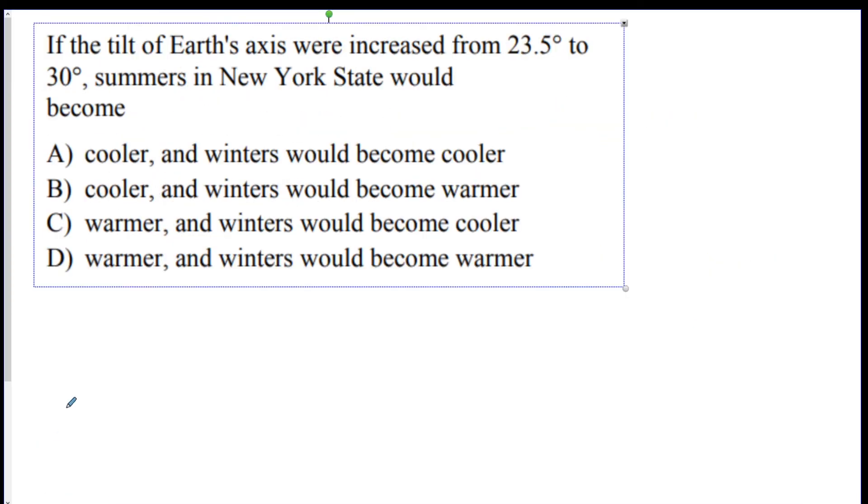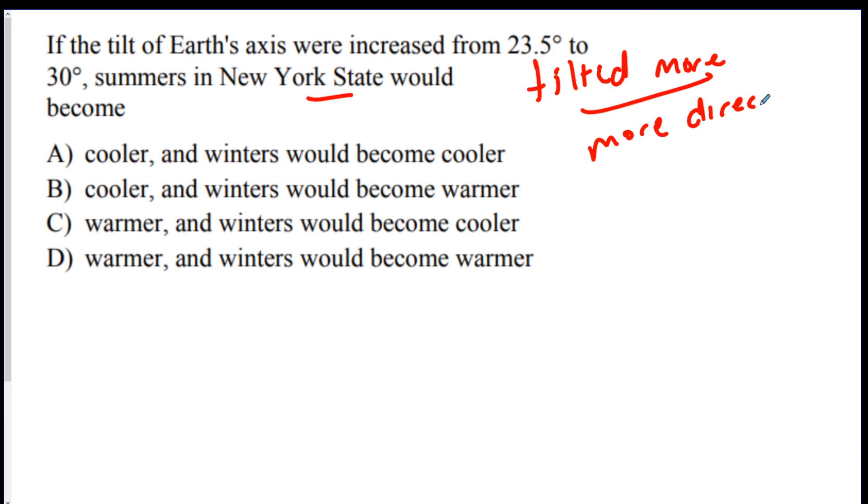Next one. If the tilt of the Earth was increased from 23.5 to 30, summers would become what? If we're tilted more towards the sun, the sun's going to be more direct in New York State. If you have more direct sun in the summer, that means that your summers would be hotter. So it's not going to be A or B. And also, if you're tilted more, that means when the wintertime comes around, you'd be tilted more away. So winters would actually become colder. So the answer would be C.